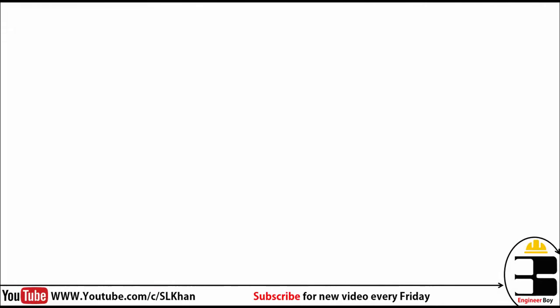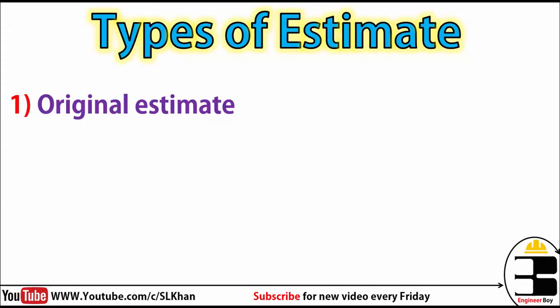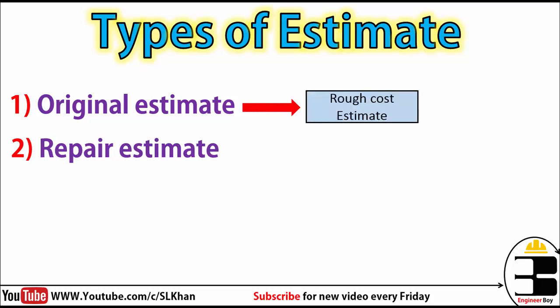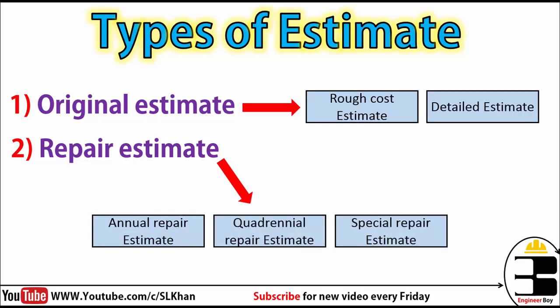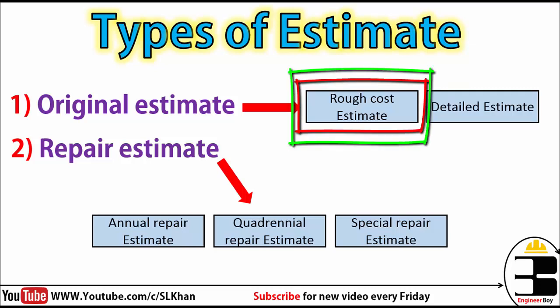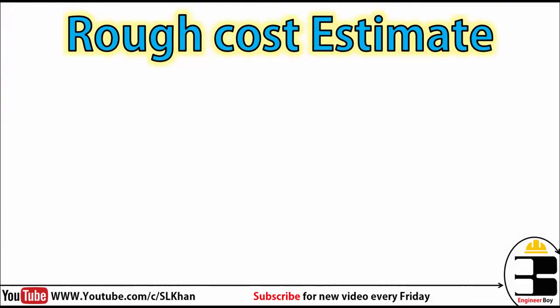As you know, there are two types of estimates: the original estimate and the repair estimate. They each have their own types — the rough cost estimate and the detail estimate — and the repair estimate has three types. But our focus today is only the rough cost estimate.